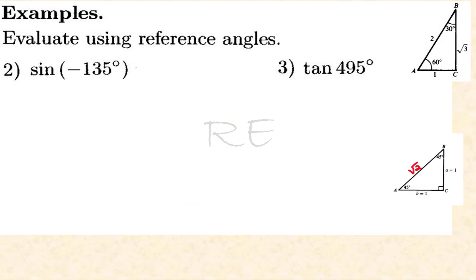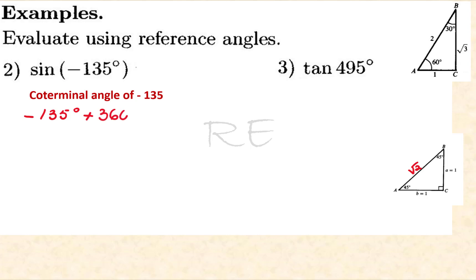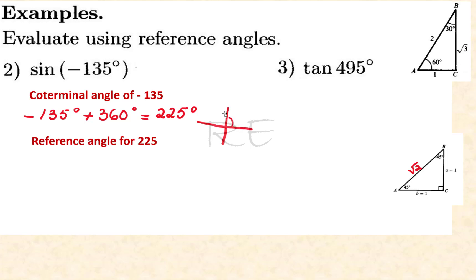Evaluate using reference angles. First, we'll find the coterminal angle of negative 135. It's negative 135 plus 360, and that coterminal angle is 225 degrees. Now we need to find the reference angle for 225 degrees. Since 225 degrees is a third quadrant angle, the reference angle theta prime is equal to 225 minus 180, which gives 45 degrees.